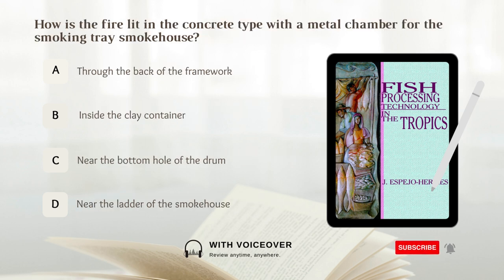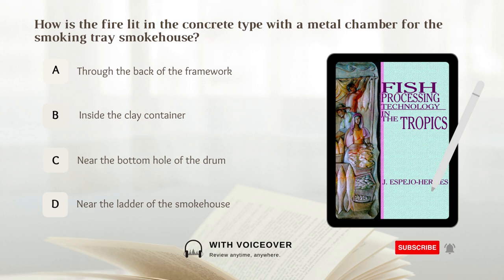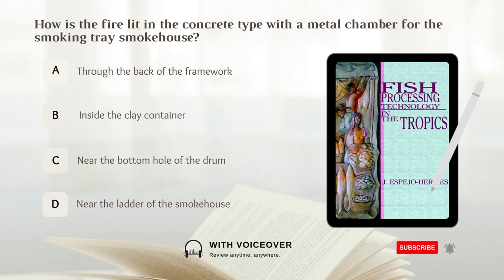How is the fire lit in the concrete type with a metal chamber for the smoking tray smokehouse? Answer: A. Through the back of the framework.